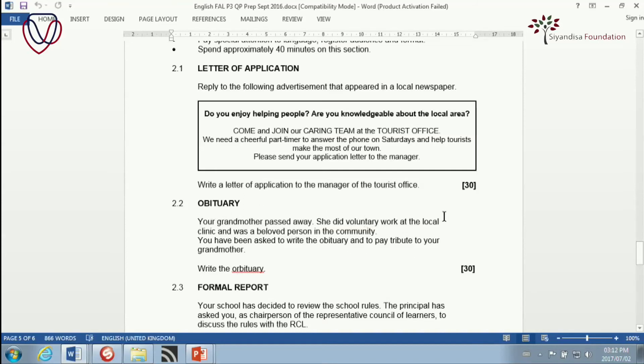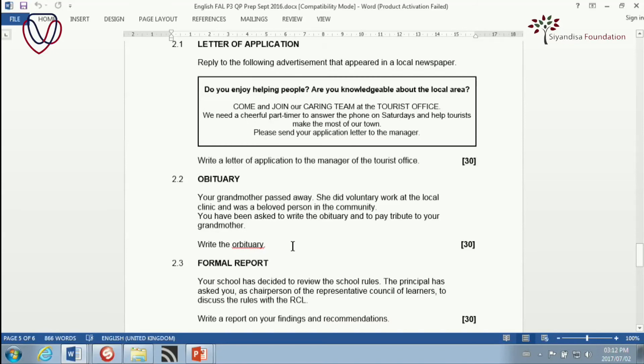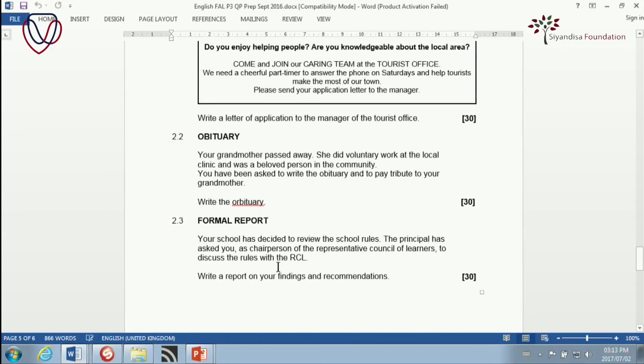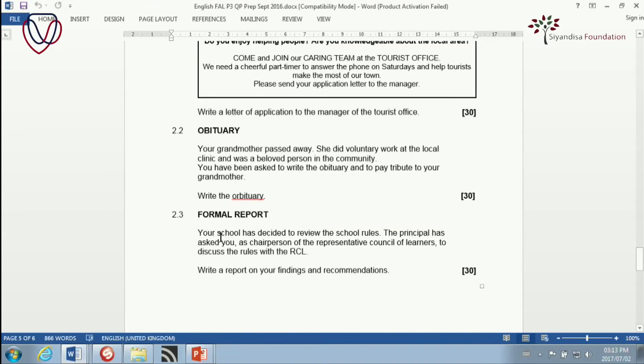Then here, obituary. Your grandmother passed away. She did voluntary work at the local clinic and was a beloved person in the community. You have been asked to write the obituary and to pay tribute to your grandmother. This one here, and to pay tribute. You are going to eulogize her a little bit in this one. You are allowed to say how wonderful she was. And obviously, you are going to specify about her voluntary work at the local clinic. That is how you are going to pay the greatest tribute to her and how she served the community that she loved so well. Then, note this one. Formal report. This is an interesting one, by the way. Your school has decided to review the school rules. The principal has asked you, as chairperson of the representative council of learners, to discuss the rules with the RCL. Write a report on your findings and recommendations. Brilliant. I think that's excellent.